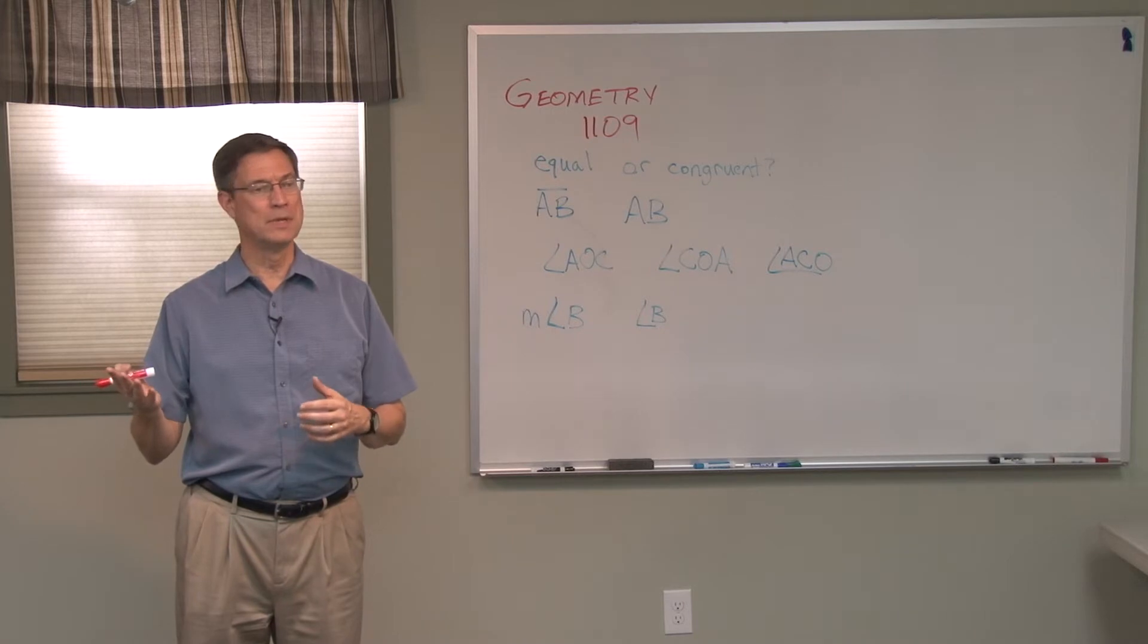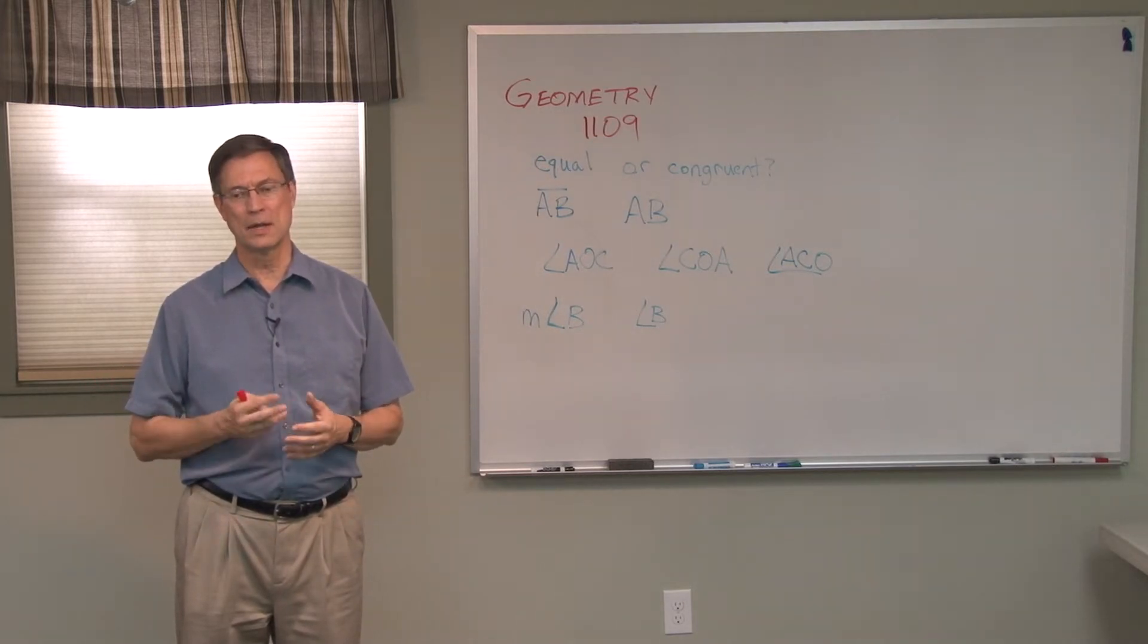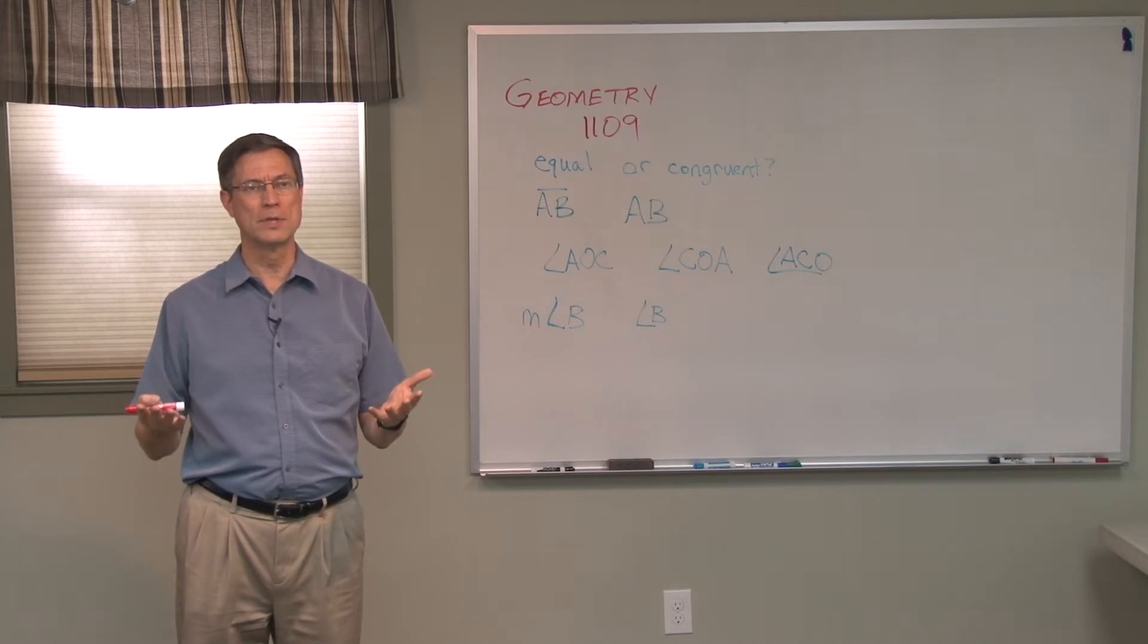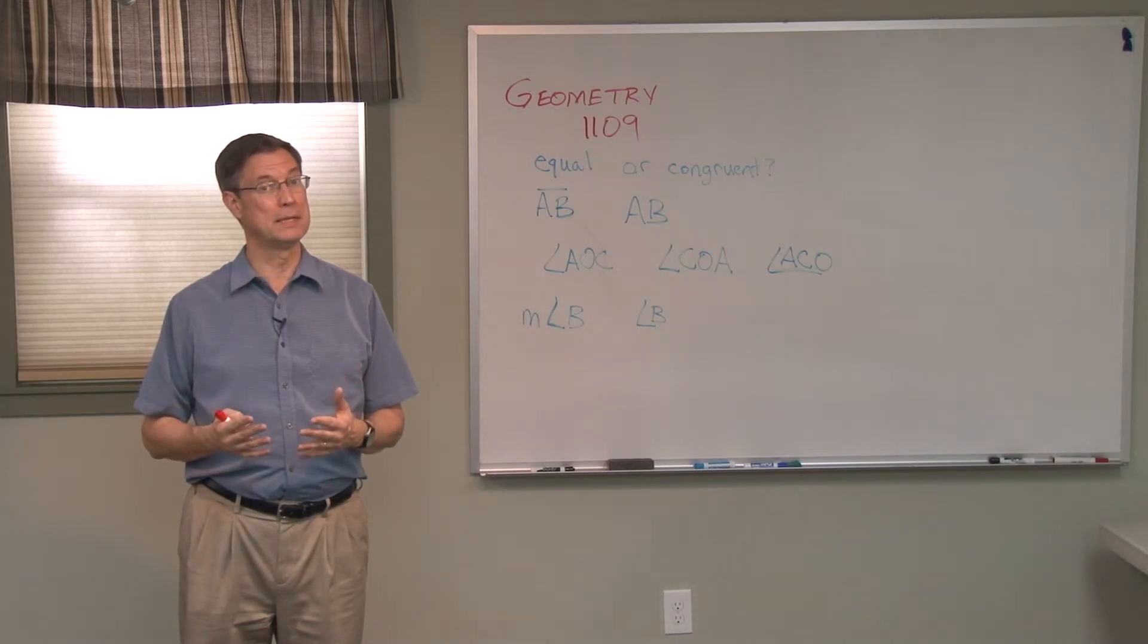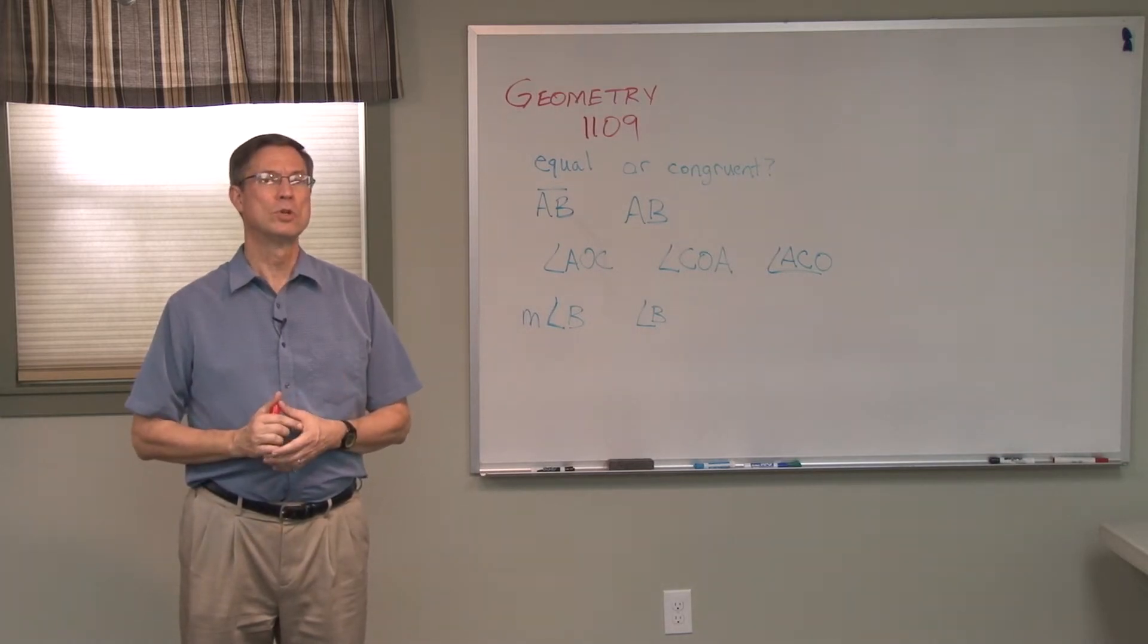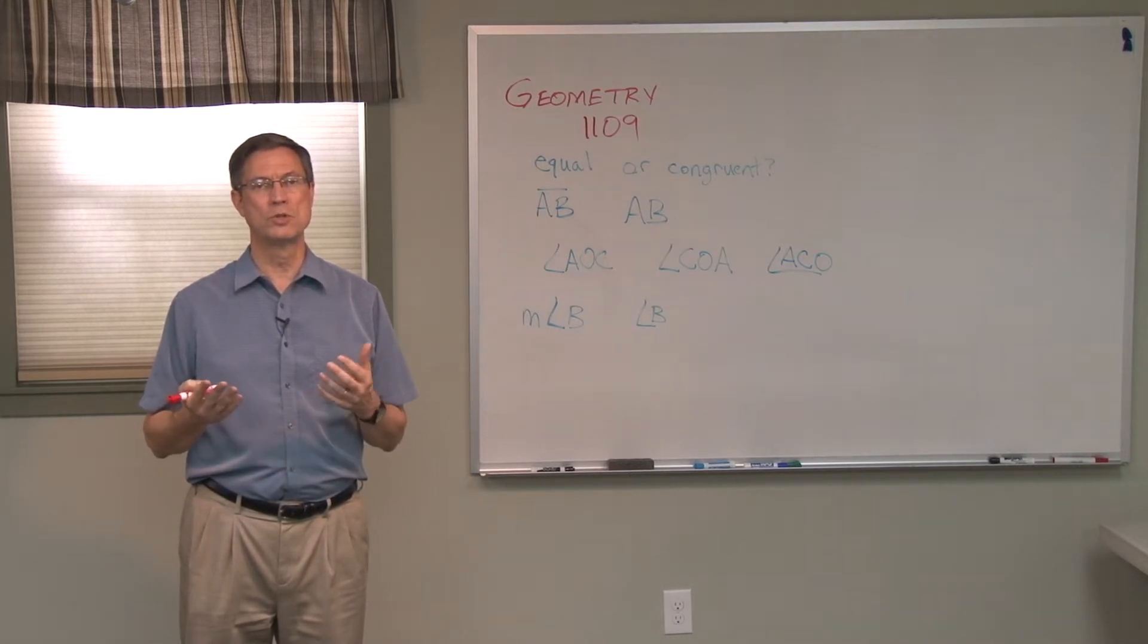You know, this line segment is congruent to this line segment, and you look at it and say yeah, it looks like they're equal. But equal and congruent actually have very different meanings in geometry.